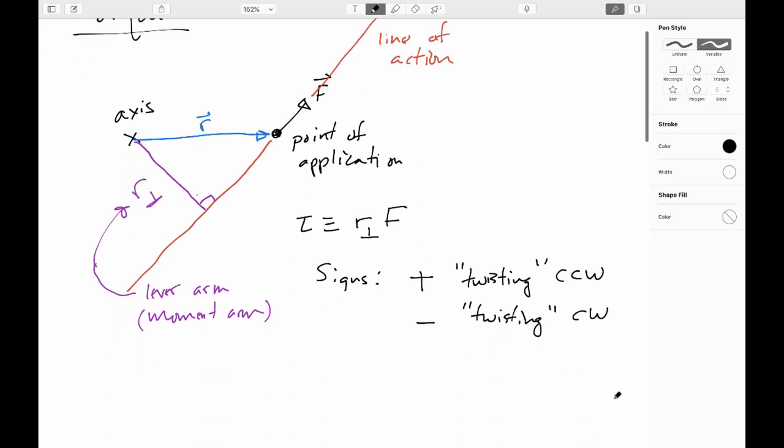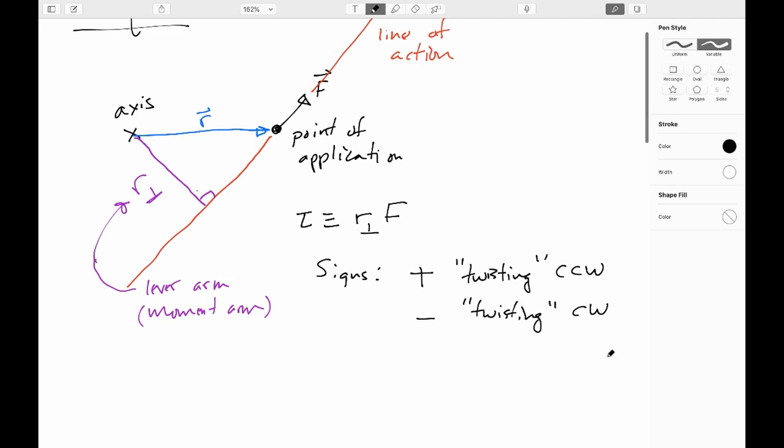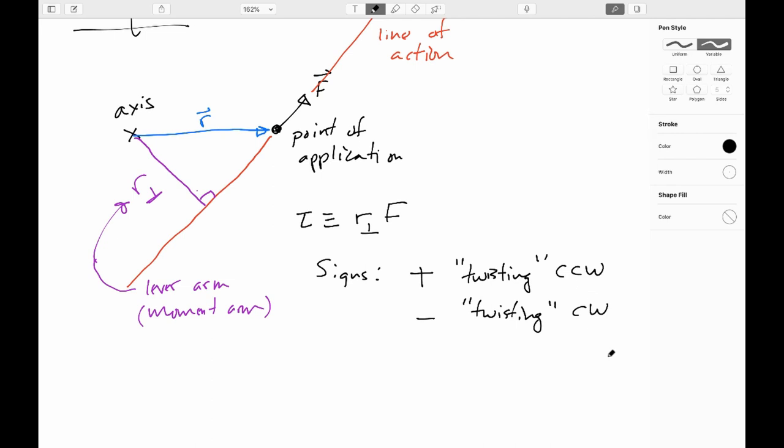Of course, you're free to define it otherwise. But if you do, you'll need to specify it because a physicist will assume a positive torque means you're trying to twist counterclockwise. And negative one means you're trying to twist it clockwise.